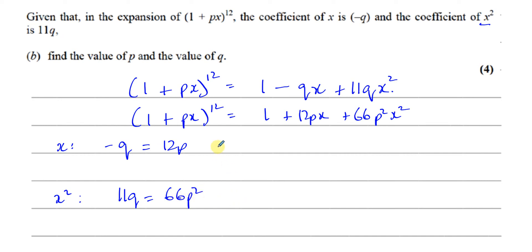So if I simplify this a bit, I can say that means Q is equal to minus 12P. And if I simplify this, I can say Q is equal to, if I divide by 11, that's going to be 6P squared.